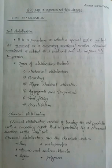Now let's have a look on the types of stabilization. Types of stabilization include mechanical stabilization, cementing, physiochemical alteration, aggregates and dispersants, void filling, and consolidation. Among these, lime stabilization comes under chemical stabilization.